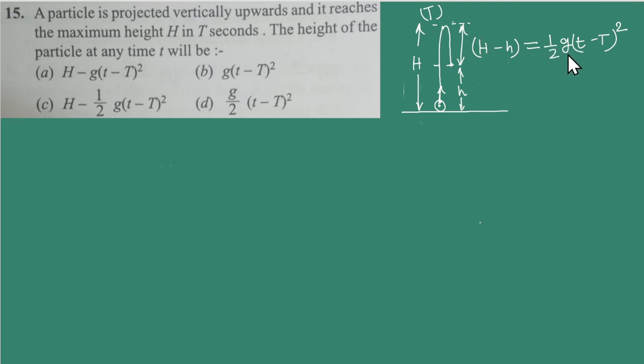So you can write half g and this time is starting from the point of projection that is t equal to 0 and it will move for time T. Then again will move for the remaining time that is T minus capital T. The total time here is T.